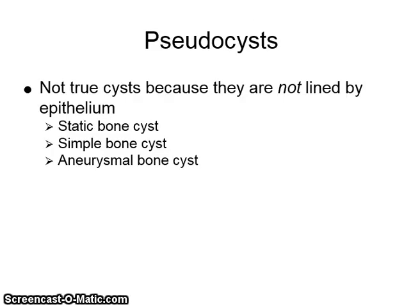Pseudocysts are not really cysts because they are not lined with epithelium. Three examples are the static bone cyst, the simple bone cyst, and the aneurysmal bone cyst.